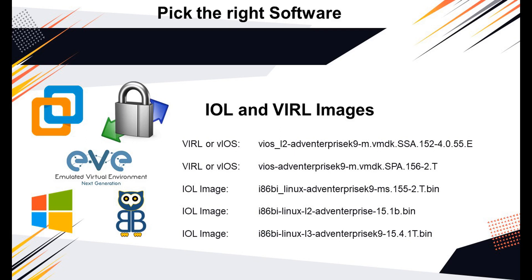We will see different installation methods for each image type. We will also test each image to confirm whether the images are operational. You need an SFTP server to upload the images in their respective directory. I would recommend you to download WinSCP software from its official website and install it on your laptop or desktop. I will also drop the link in the description box for your reference, and you can use that link to download WinSCP.